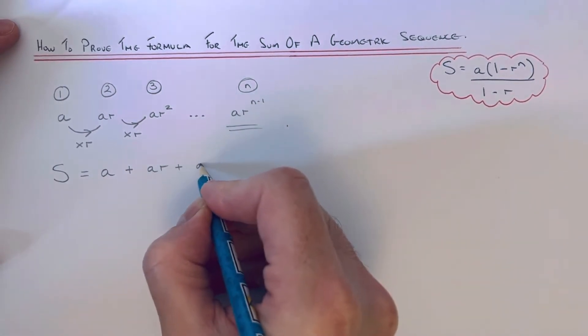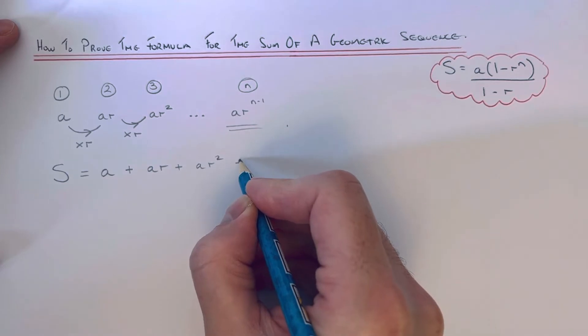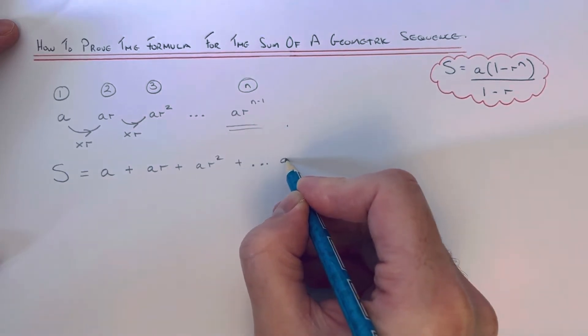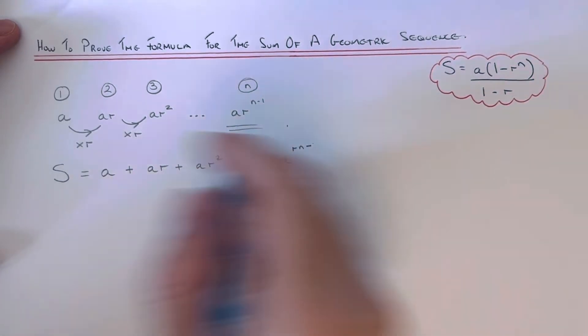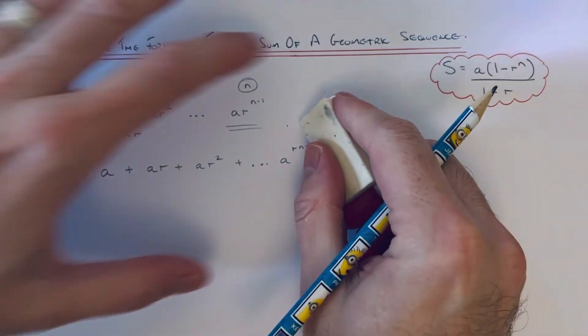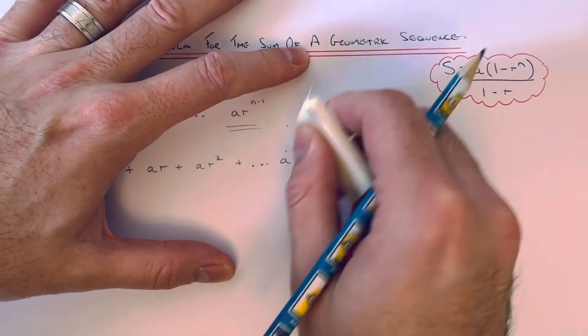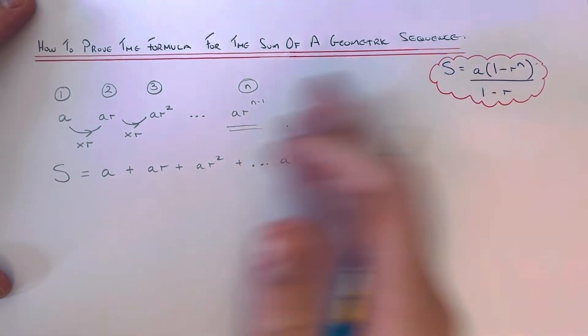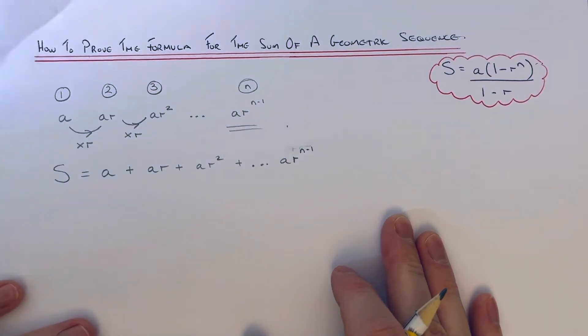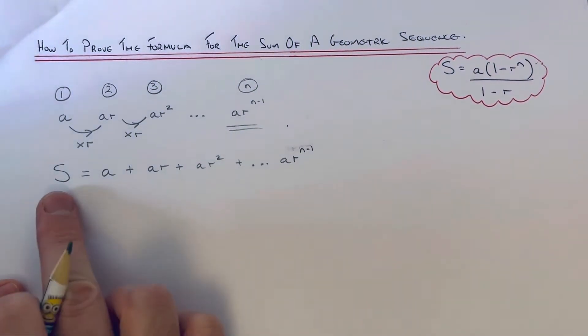plus ar squared all the way to the end, which is ar to the power of n minus one. So what I'm going to do next then is I'm going to multiply this formula here by r.